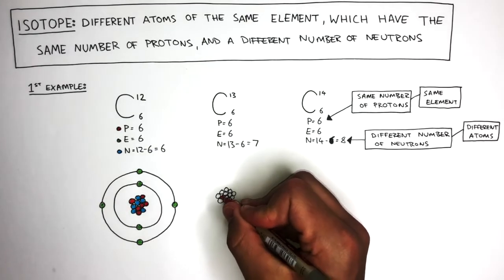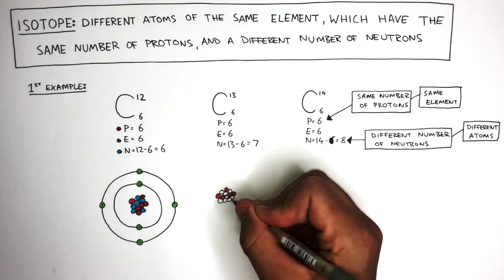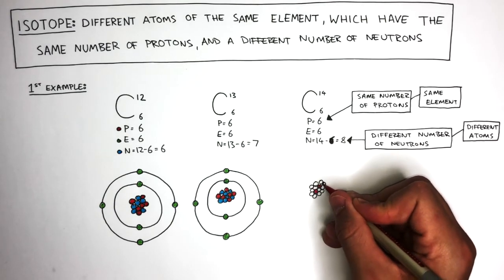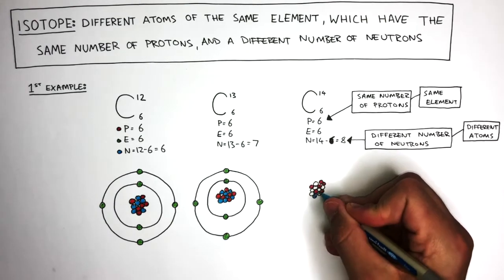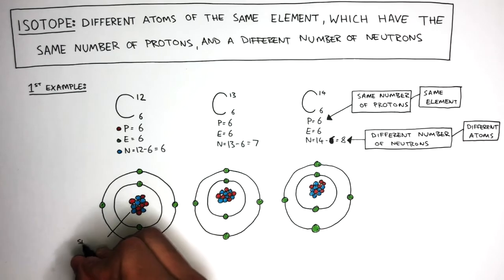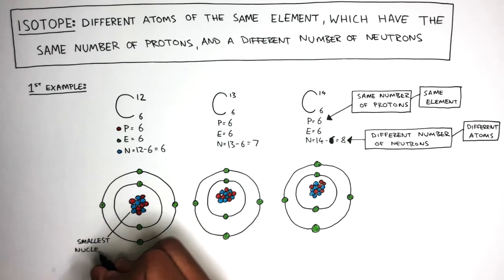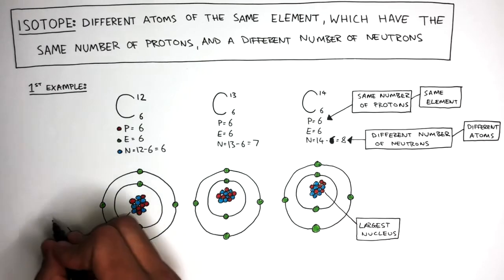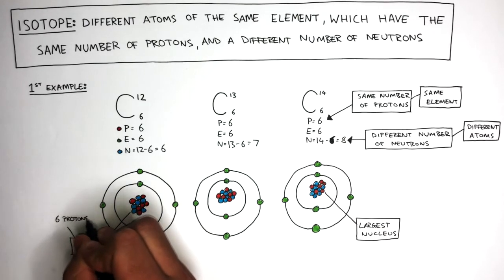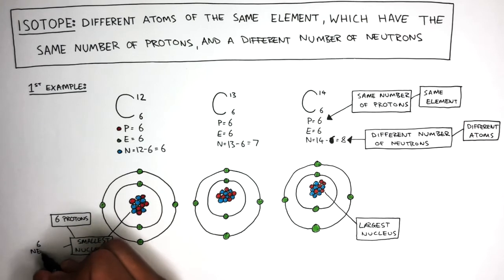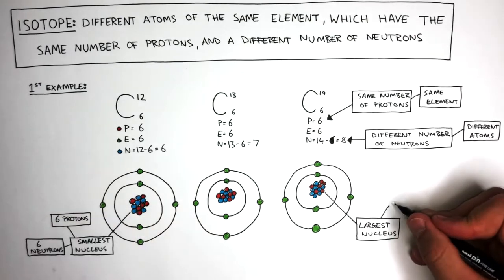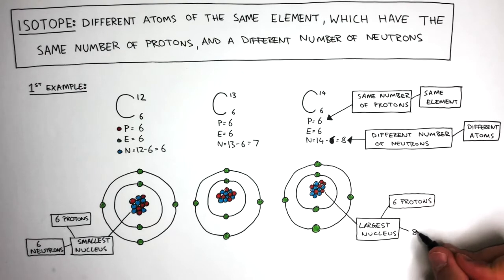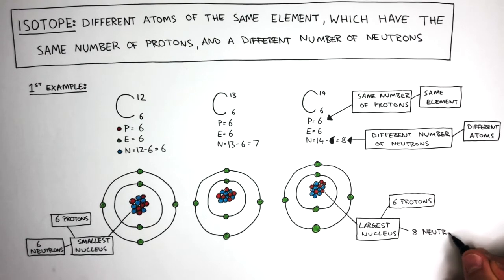In a carbon-13 isotope, there are still six protons but this time there are seven neutrons. In a carbon-14 isotope, again there are six protons but there are eight neutrons. Carbon-12 has the smallest nucleus whereas carbon-14 has the largest nucleus. Carbon-12 is the smallest because in its nucleus it has six protons and six neutrons, and what makes carbon-14 the largest is having eight neutrons.